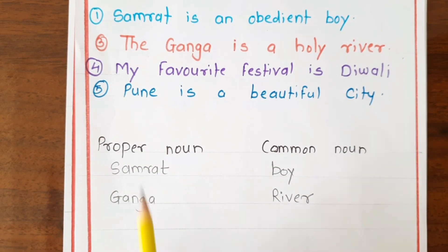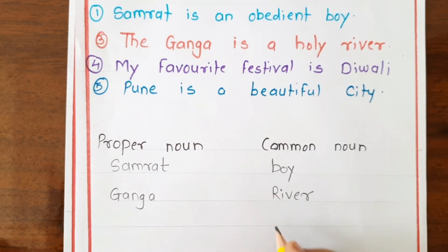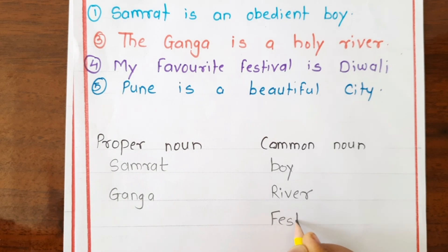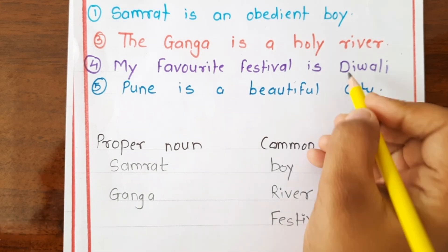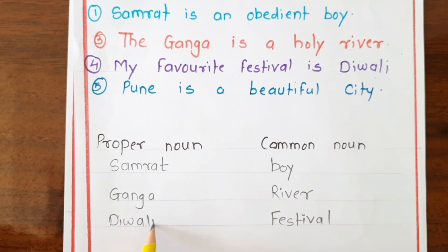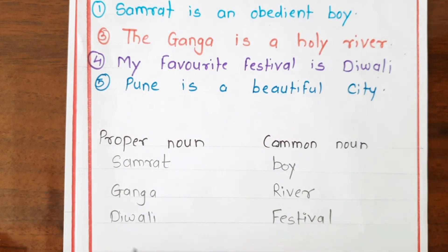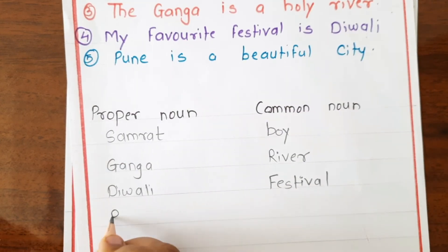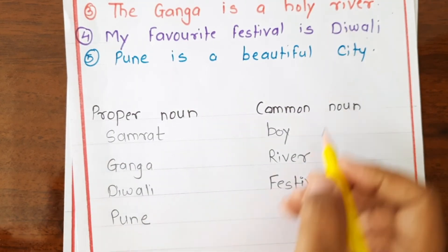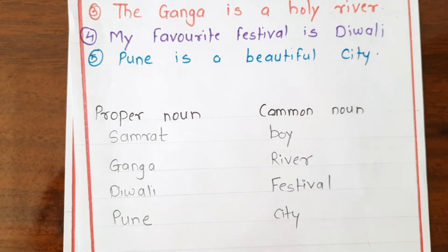Next sentence: 'My favourite festival is Diwali.' 'Festival' is the common noun and 'Diwali' is the proper noun. Next sentence: 'Pune is a beautiful city.' 'Pune' is the proper noun and 'city' is the common noun.